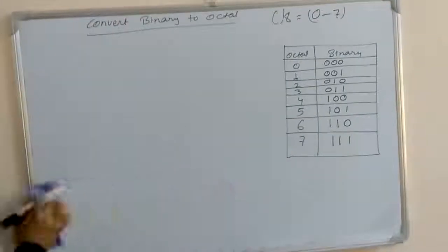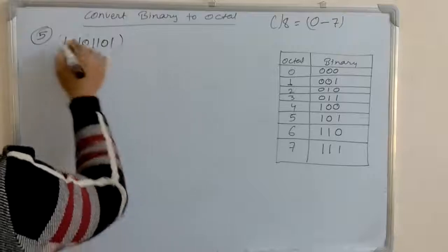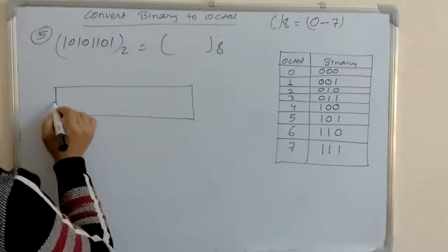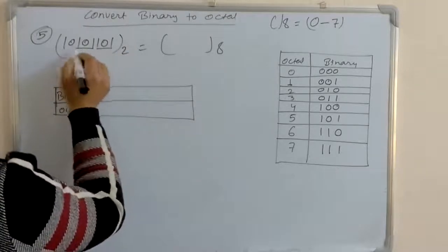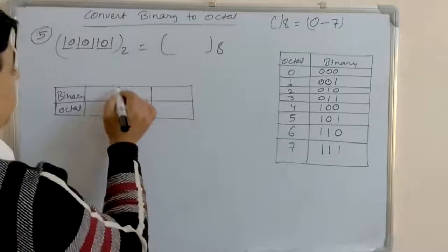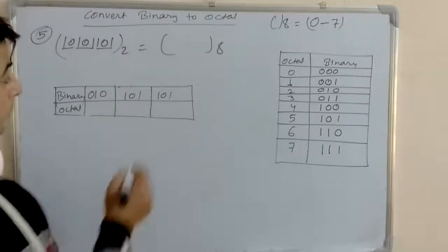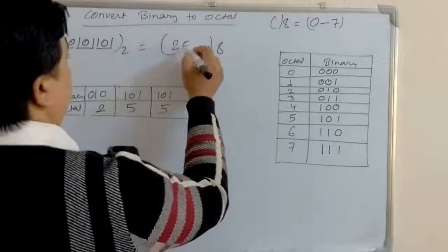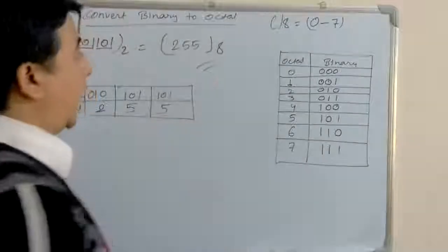Let's take the next example: 10101101 binary to octal. We create the table and separate into 3-bit groups: 010, 101, 101. We add one zero to the leftmost group if required. Then 010 is equivalent to 2, 101 is equivalent to 5, and 101 is equivalent to 5. So 10101101 binary is equivalent to 255 octal.